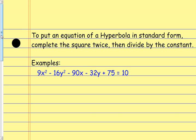If we come across the equation of a hyperbola that's not in standard form, what we have to do is rewrite it in standard form. In order to do that, we have to complete the square twice and then divide by the constant. That's the exact same thing we did with the ellipse — complete the square twice and divide by the constant. The only difference is that with the ellipse we had a positive in between, but here we'll have a negative, which means we'll be dealing with negative numbers. So there are a couple more places where we can make sign errors, but other than that it's almost the exact same thing.